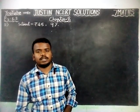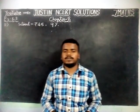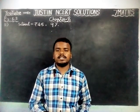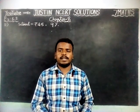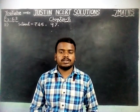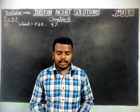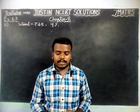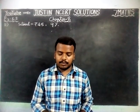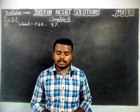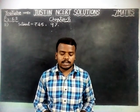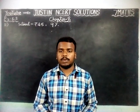Hi friends, welcome to Justine MCRD Solutions. In this video, we are going to see 700 Maths Chapter 8 Exercise 8.3 11th Question. The question is: If Meena gives an interest of Rs.45 for 1 year at 9% rate per annum, what is the sum she has borrowed?